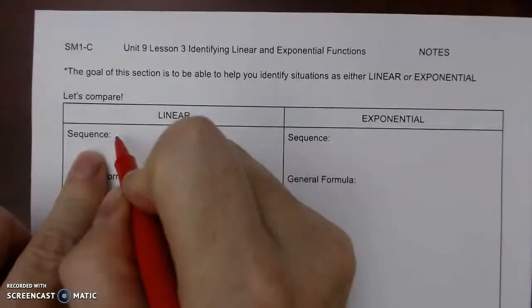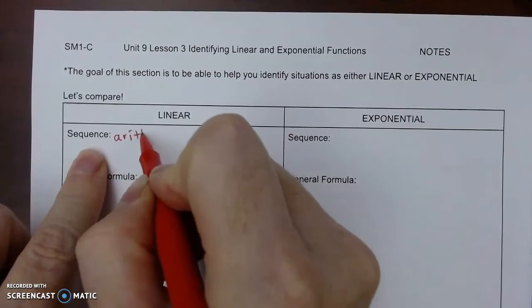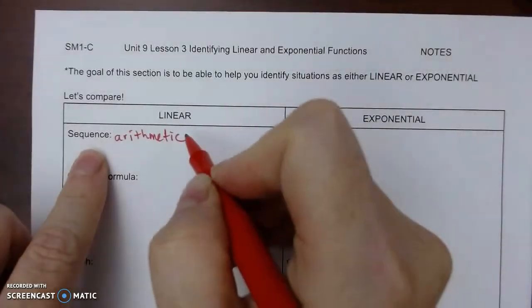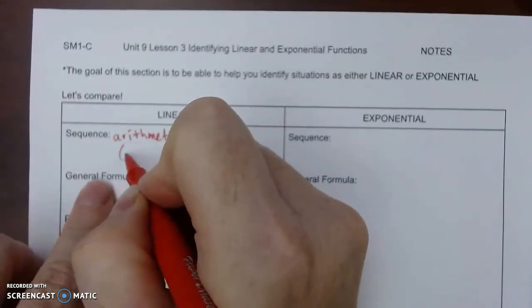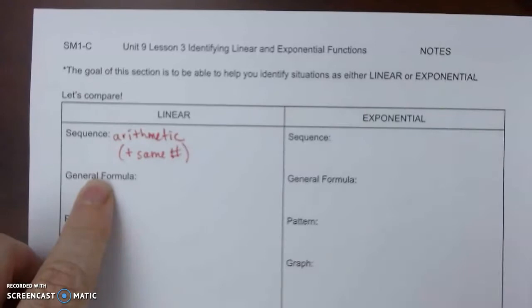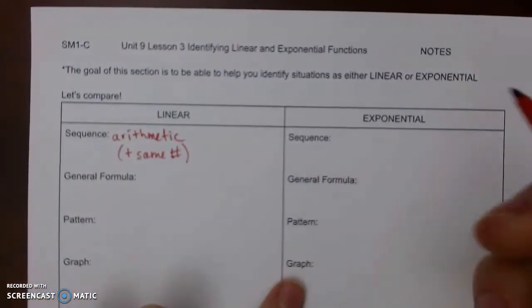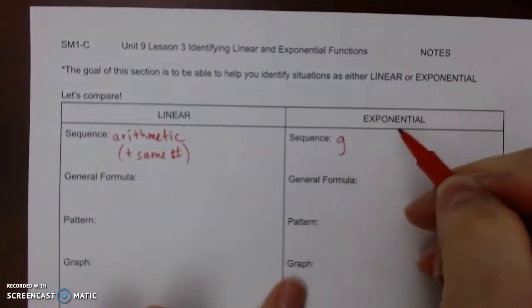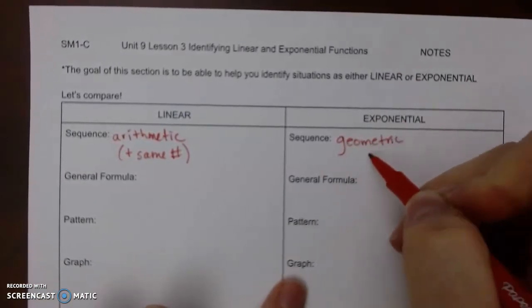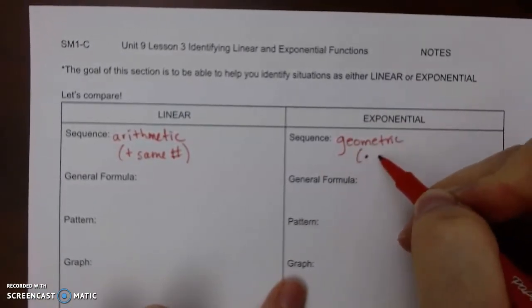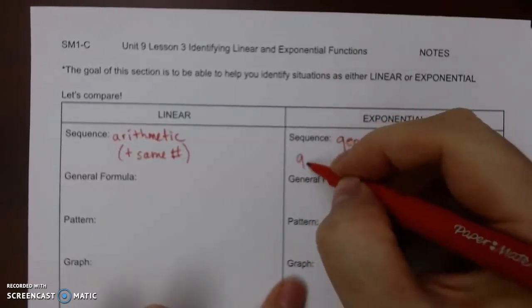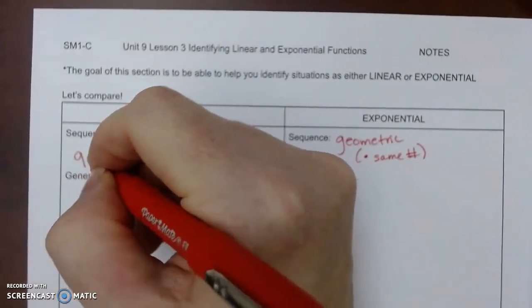So on a sequence, linear is really the same as an arithmetic sequence, and we talked about that in 9.1. So arithmetic, which means you're going to be adding the same number. For geometric, it's actually the exponential. Geometric, which means you are multiplying by the same number, which was 9.2.